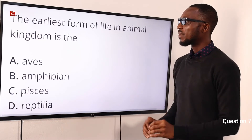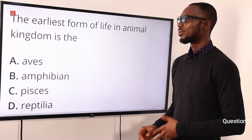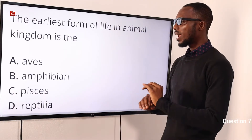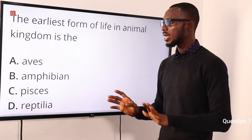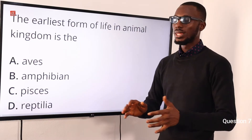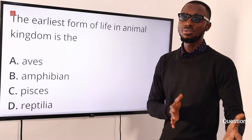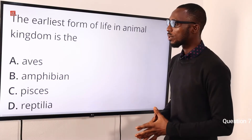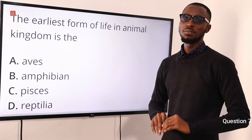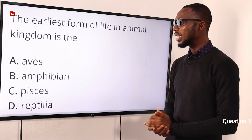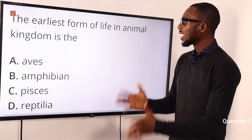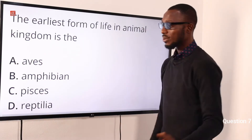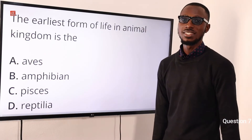Question 7. The earliest form of life in the animal kingdom is what? Recalling the evolution of the higher vertebrates, when talking about the circulatory system, there is a change that occurs from gills to lungs. If we pick on gills, we are majorly talking about Pisces — starting from fish. The correct option is option C for Pisces. The earliest form of life in the animal kingdom is Pisces, or the fishes. Option C is very correct.